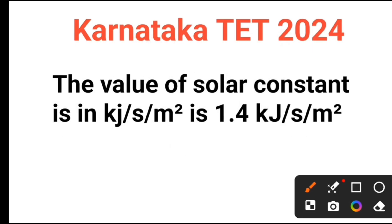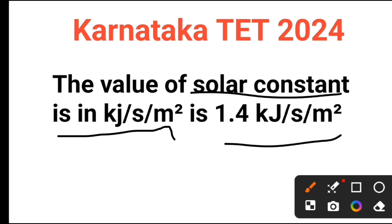The value of the solar constant is 1.4 kW per second per meter square.